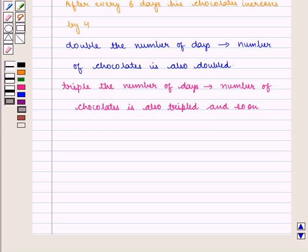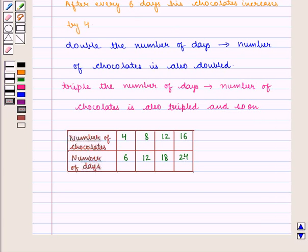It means the proportion of chocolates received is the same, and we get the following table which tells us that the number of chocolates that Samuel receives: after six days will be four, after twelve days will be eight, after eighteen days will be twelve, and after twenty-four days will be sixteen, and so on.